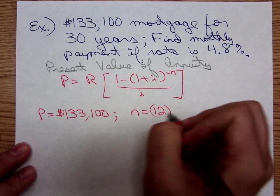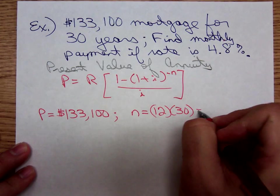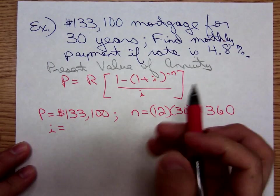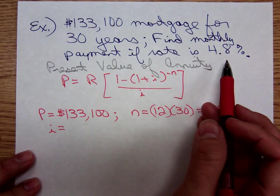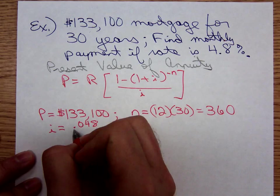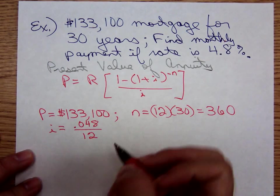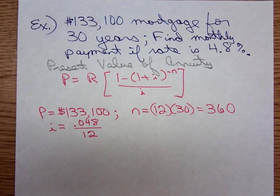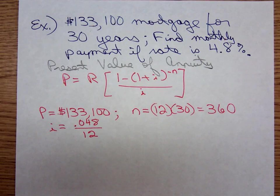And i, the rate per period: you take the annual rate, that 4.8% written as a decimal, 0.048, and divide it by 12. We're splitting that up over the year period and that's going to give us 0.004. That terminates pretty nicely.